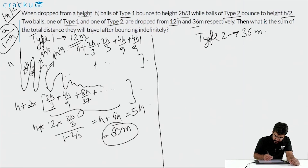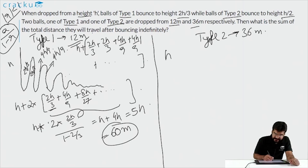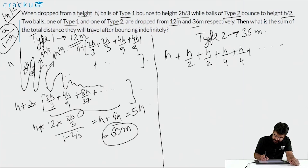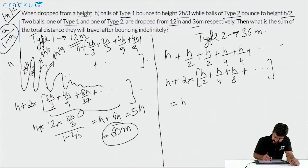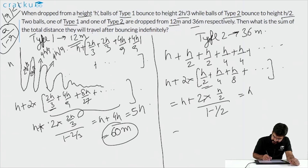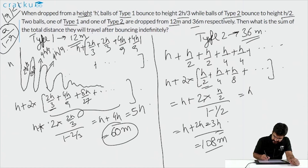For ball type 2, dropped from h = 36 m with bounce ratio 1/2: total distance = h + 2(h/2) + 2(h/4) + … = h + 2 × (h/2)/(1 − 1/2) = h + 2h = 3h = 3 × 36 = 108 metres. The combined total distance travelled by both balls is 60 + 108 = 168 metres.